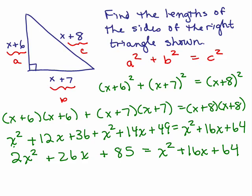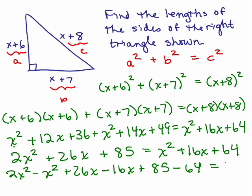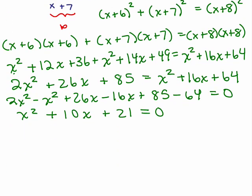All right, so we're going to have some x squared terms here. So let's get everything on one side of the equation equal to 0. So we're going to have to do 2x squared minus x squared, right, for this minus x squared to both sides. And we've got plus 26x minus 16x and plus 85 minus 64 is going to equal 0. So I've got combining like terms, I finally get x squared plus 10x plus 21 equals 0 which we have to factor.